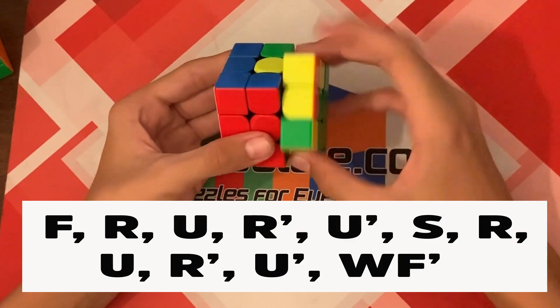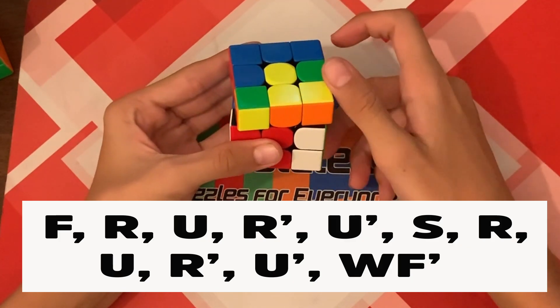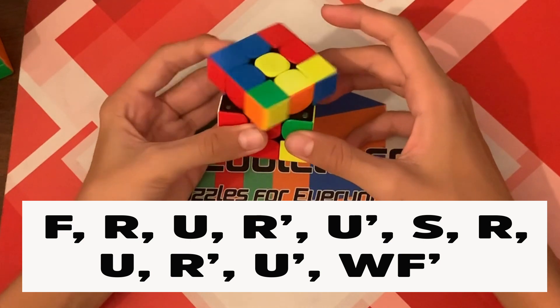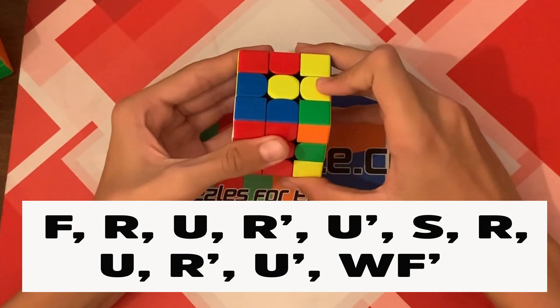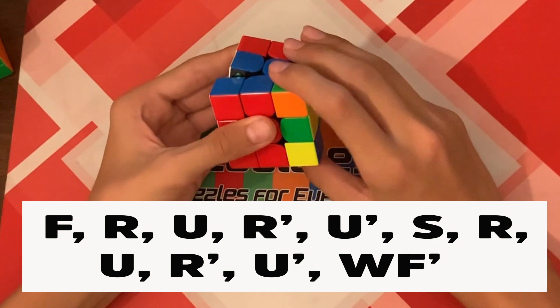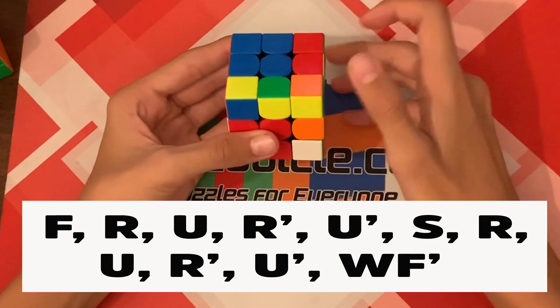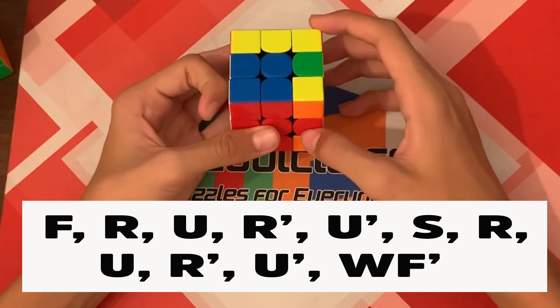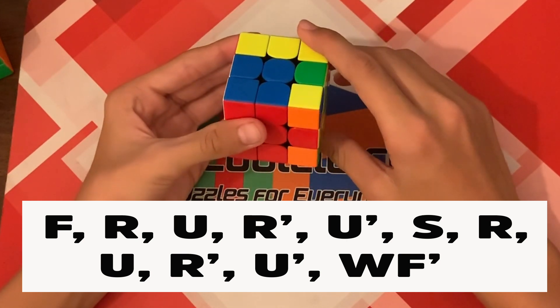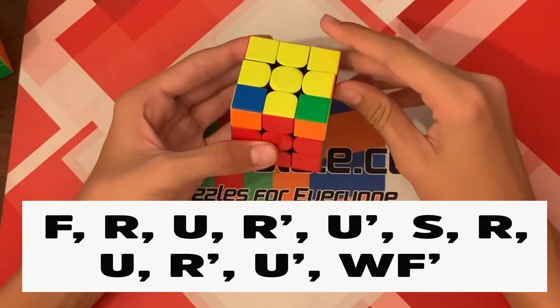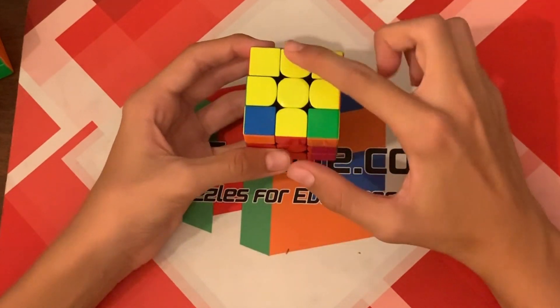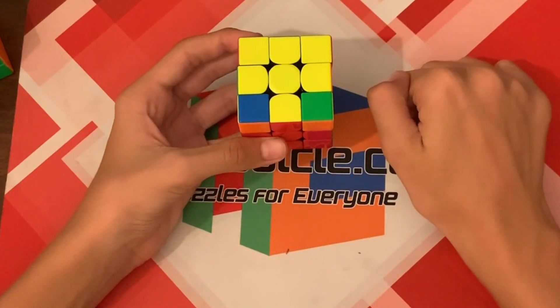F, R, U, R prime, U prime, S, which looks like this. S, and then R, U, R prime, U prime, and then wide F prime. And as you can see, we now have the yellow cross.